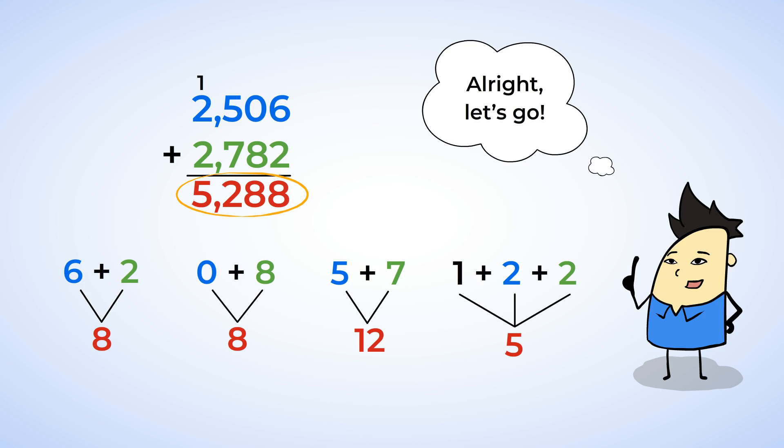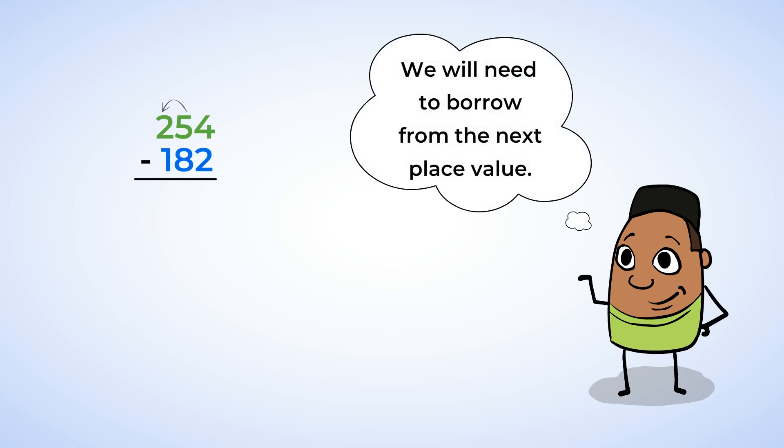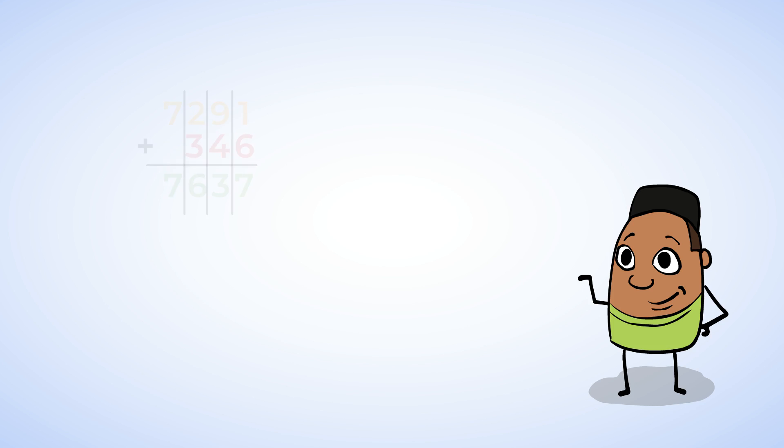Moving on over to subtraction. When subtracting, the order matters. The larger number goes on top, and we subtract the bottom number from the top. If the number is not large enough to subtract from, we're going to need to borrow from the next place value. Even if numbers don't have the same number of digits, it's important to line up the place values. Let's start with 5,672 minus 491.